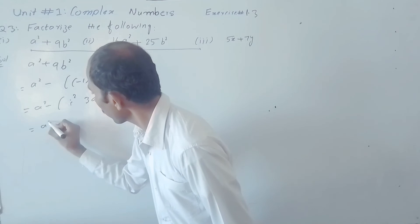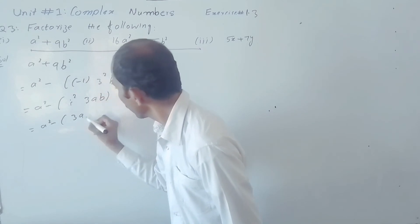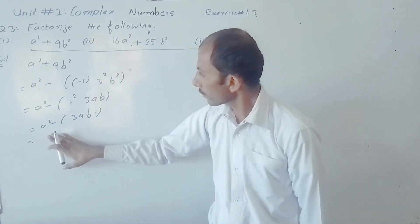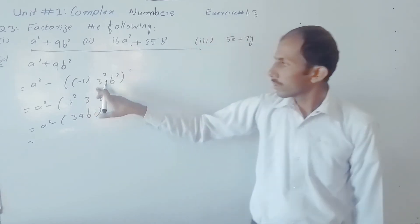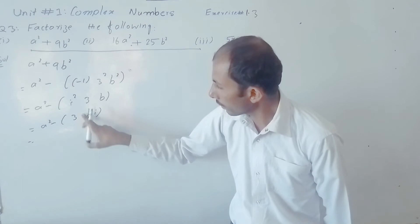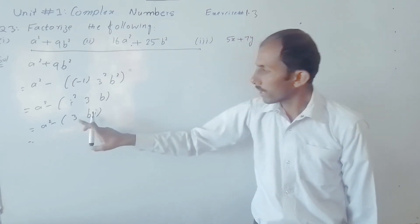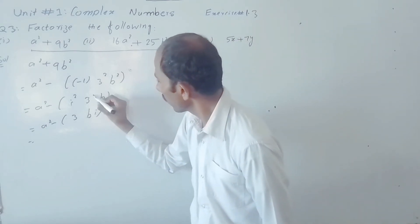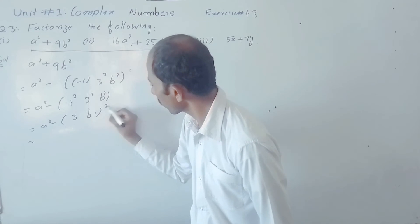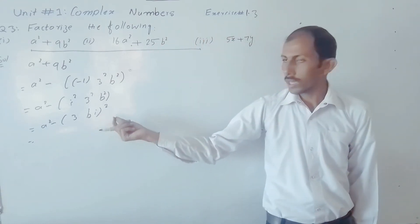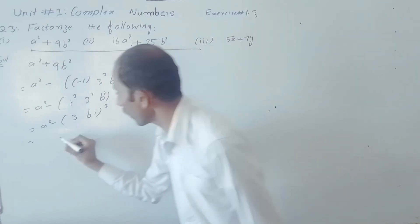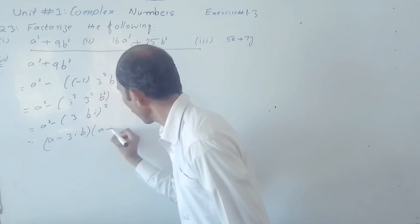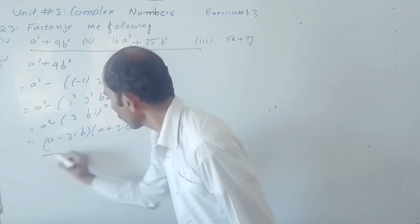So next: a² − 3ab·iota, which equals (3b)² — since a does not factor further — giving a² − 3b·iota, whole square. That whole square can also be written in the form of (a − 3b·iota) into (a + 3b·iota), which is the required solution.